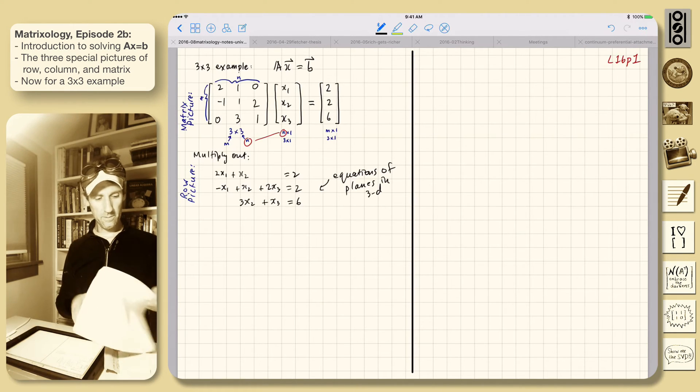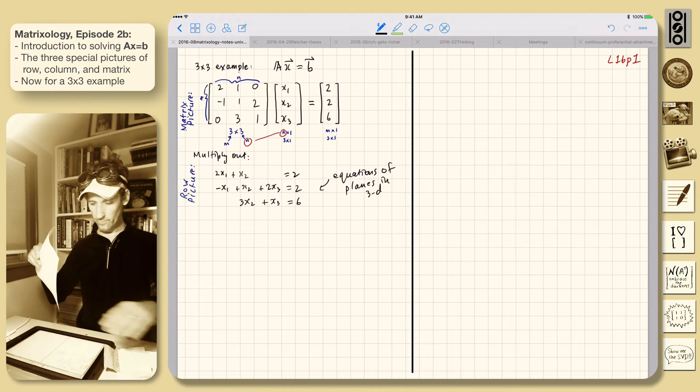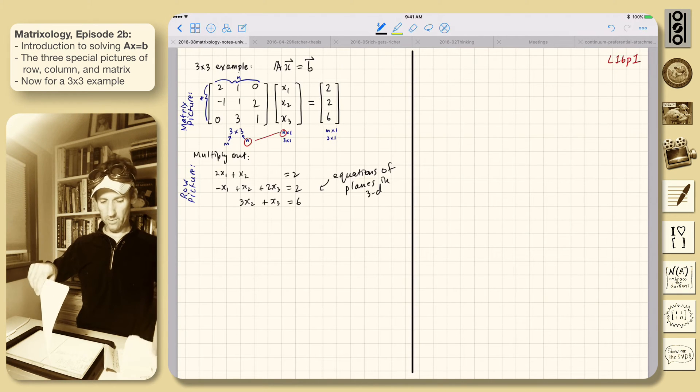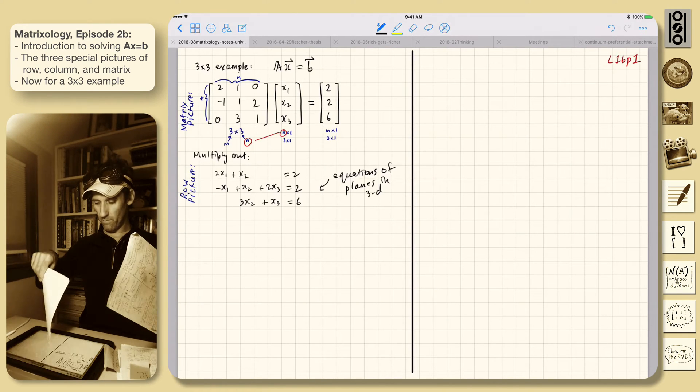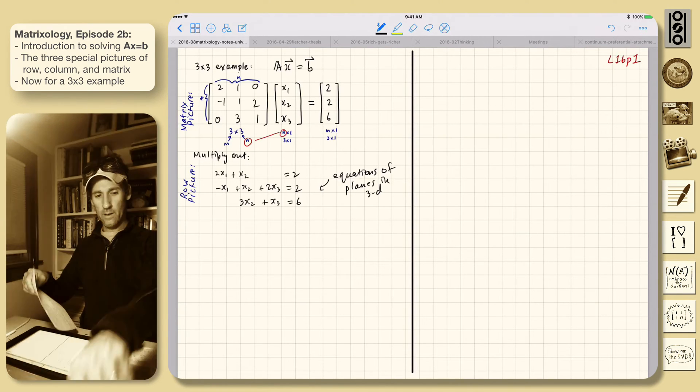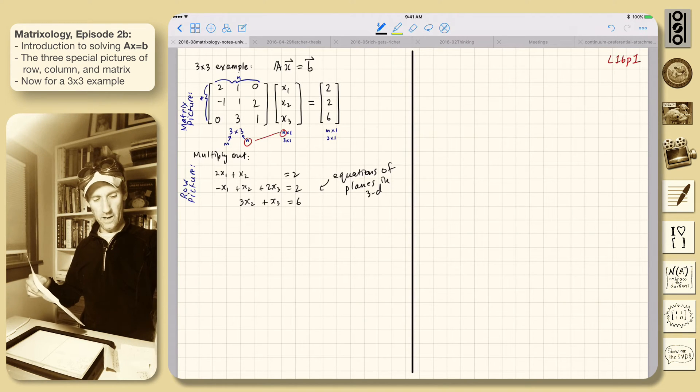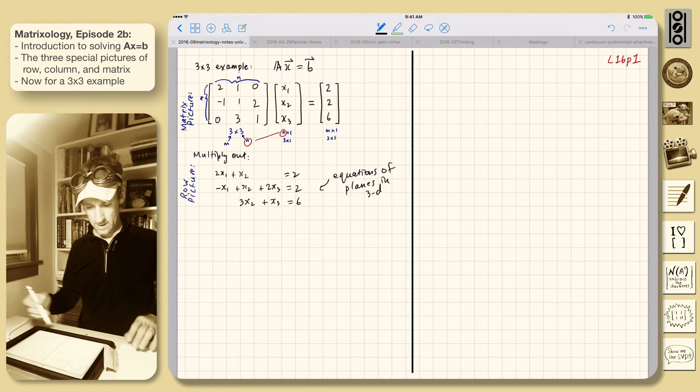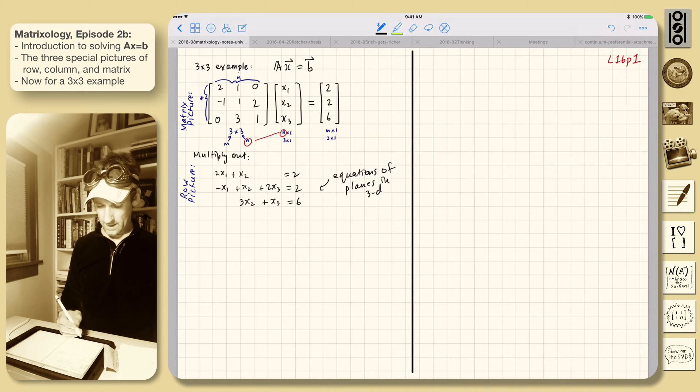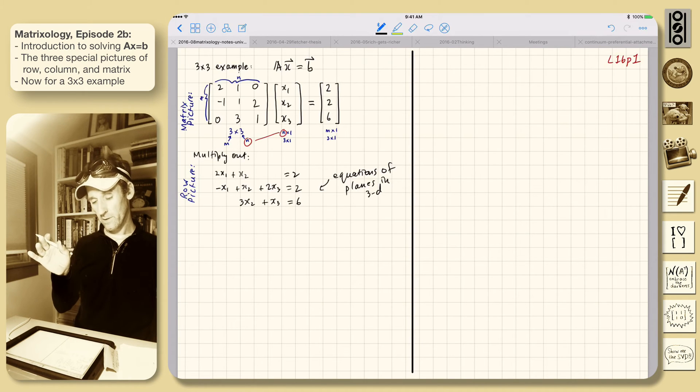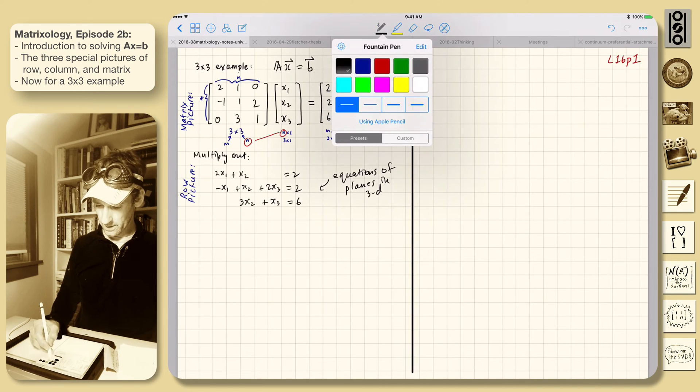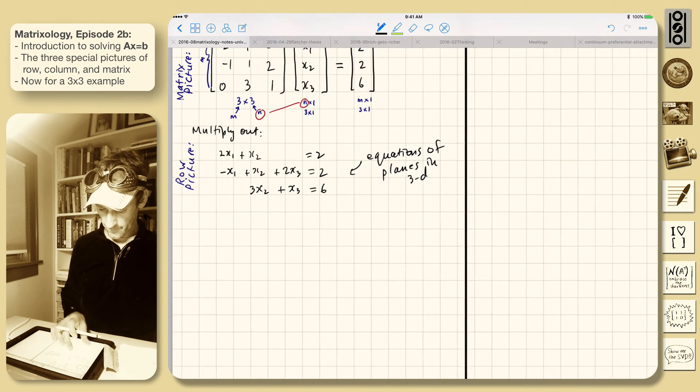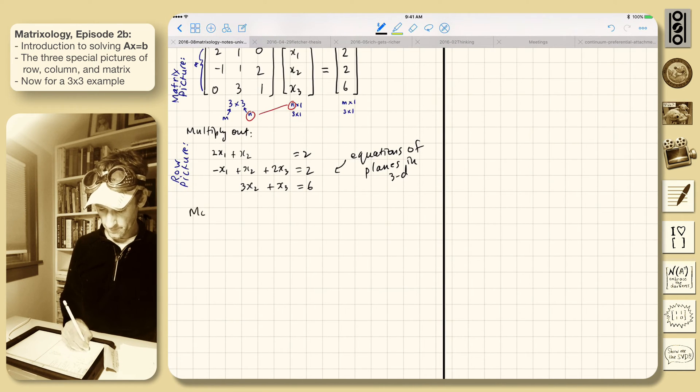Right? So the one solution case would be, imagine this is the plane. Here's another plane. And then a third plane could be here. Right? And so there's just that one point that they hit at. So that's pretty cool. If you just chose three arbitrary planes, that would work out. Okay. So that's the row picture. So we might play out in a slightly sneakier way, a little more sneakily.